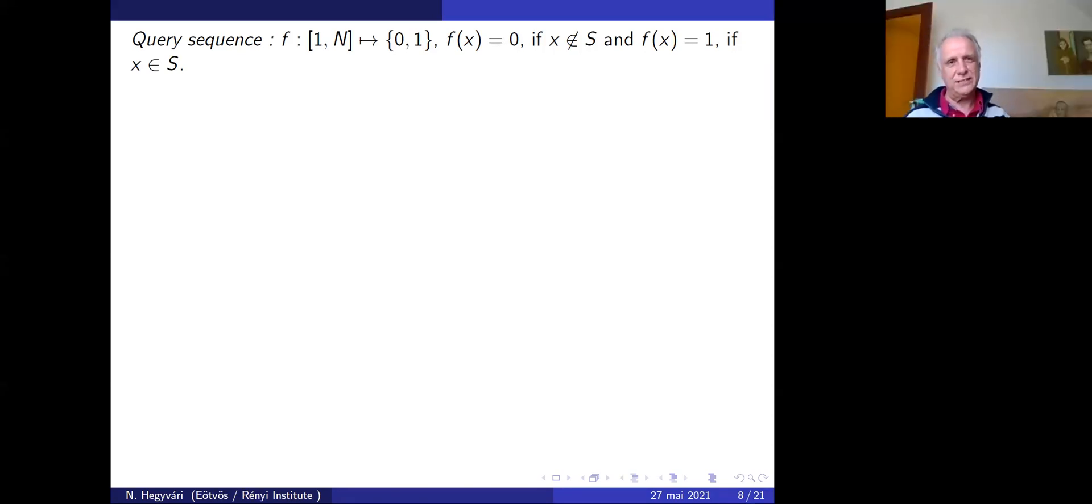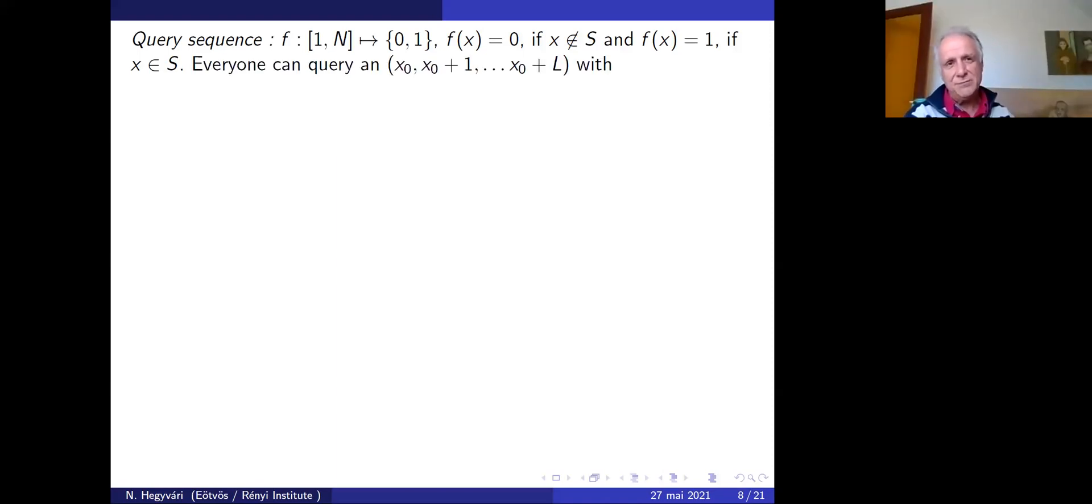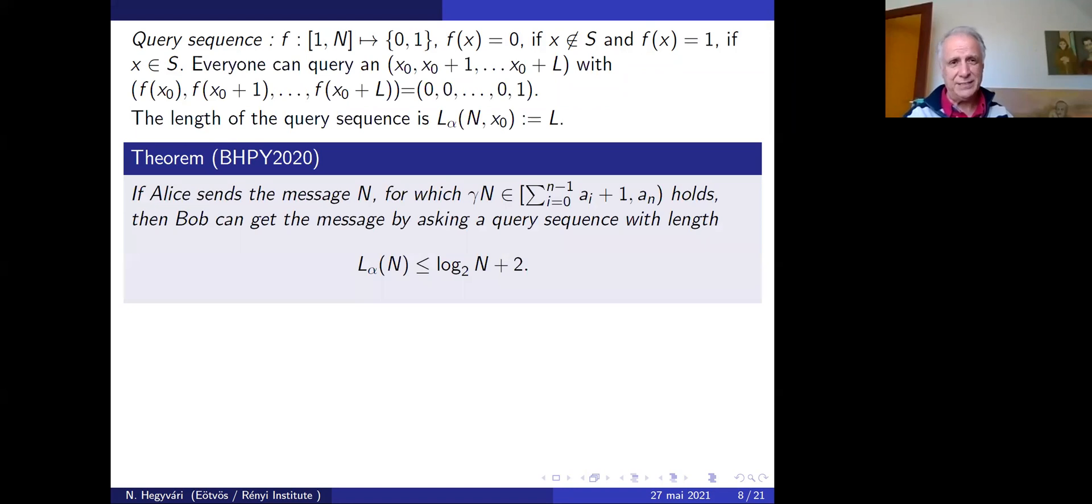Denote by S the restricted sum of A_α up to N, where the pairs differ. There is a query sequence F mapping from the first N numbers to zero and one. F(x) is zero if x does not belong to S, and one if it belongs. Then everyone can query a sequence until finding a number in S, with query length denoted by L.